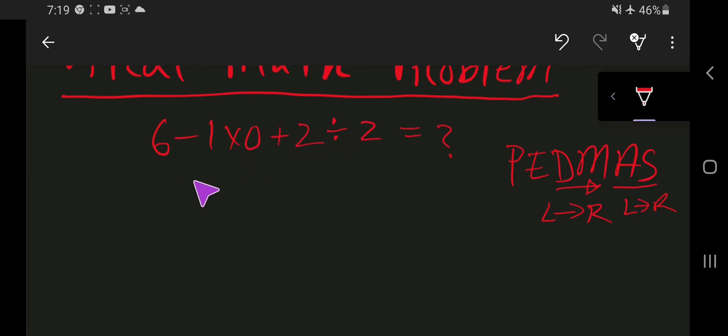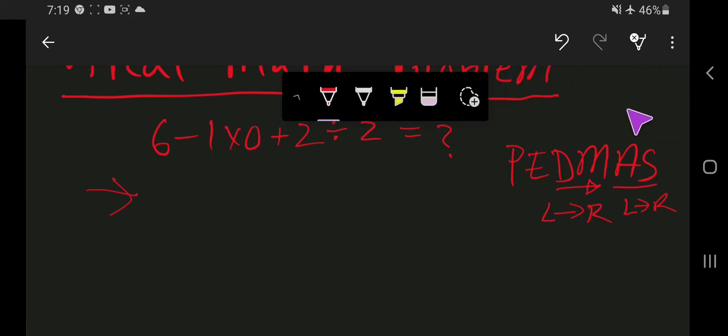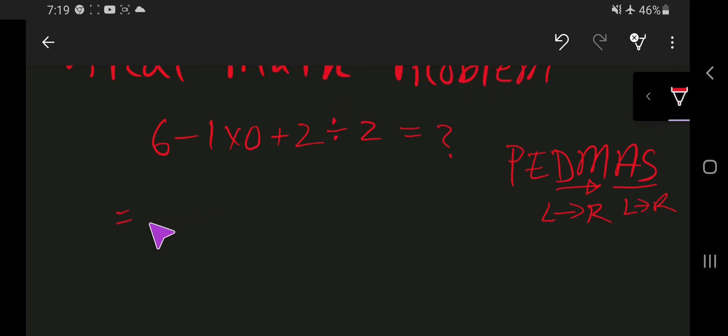So, if I work from left to right, that is from this way, then our priority will get multiplication. Right? So, look. Here 1 times 0 means 0.